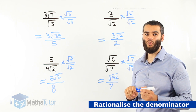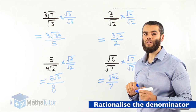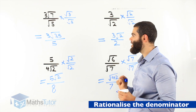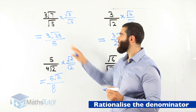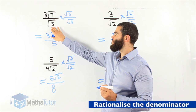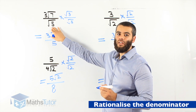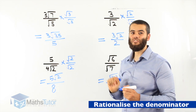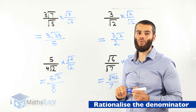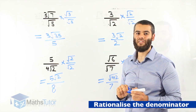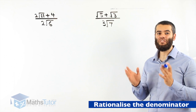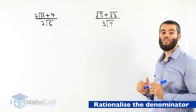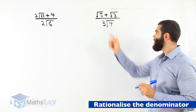It will always work, so remember to always rationalize the denominator by multiplying by the surd in the denominator. Very easy. Let's do two more examples — our last two. Once again we are asked to rationalize the denominator.